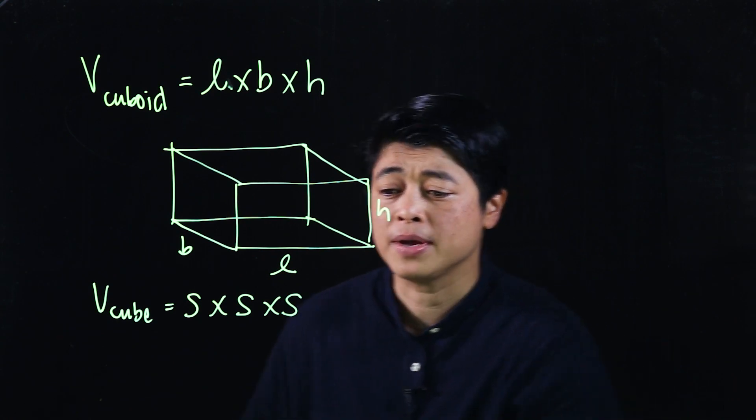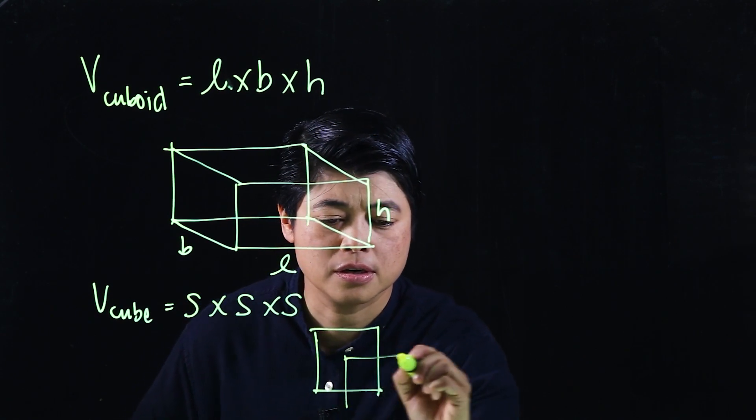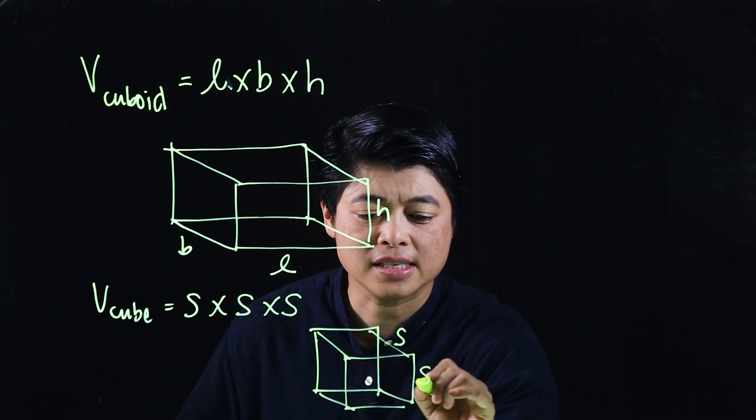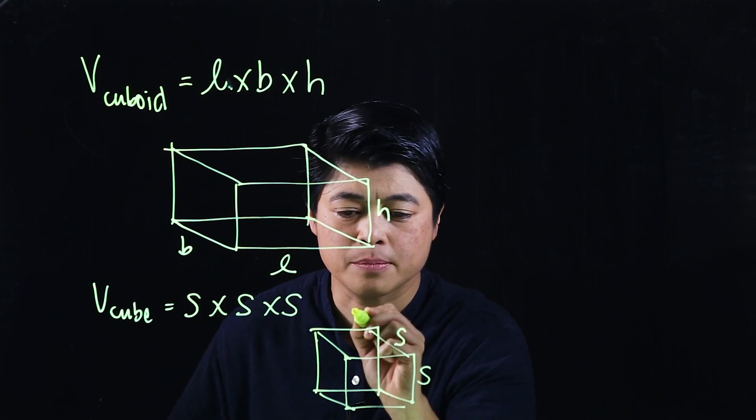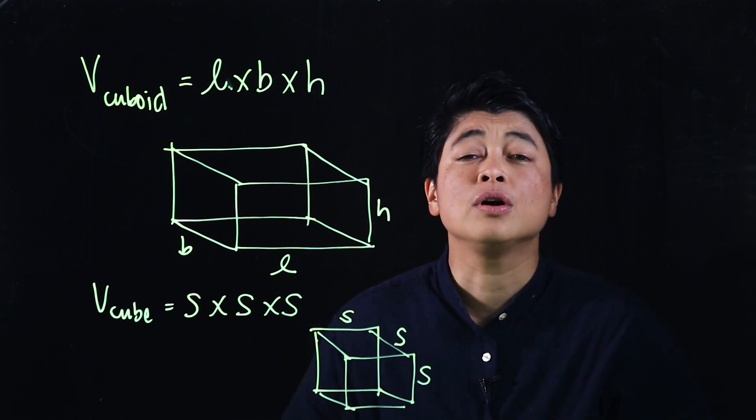The book will also, by the way, call a side an edge. So this is a cube. This side, that side, and that side are all the same. But a side is also referred to as an edge.